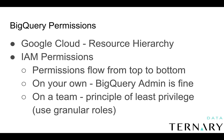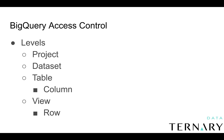BigQuery permissions are an important part of being able to use BigQuery in a safe and secure manner. With respect to BigQuery access control, there are different levels. You can attach BigQuery access control at a project level, you can control access at a dataset level, you can do column-level access permissions on a table level, and you can also do row-based access permissions on a view level.